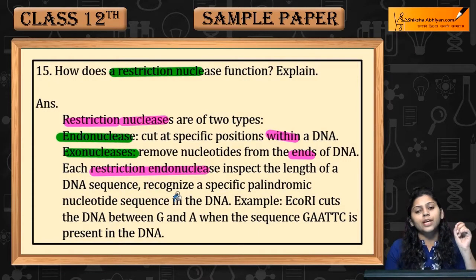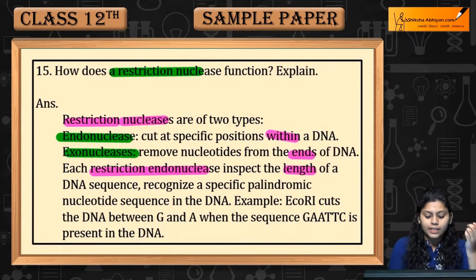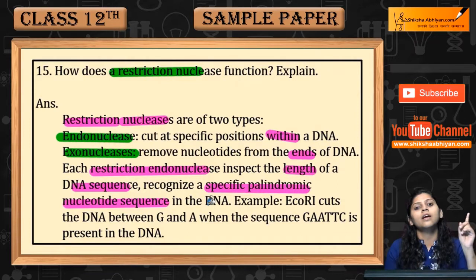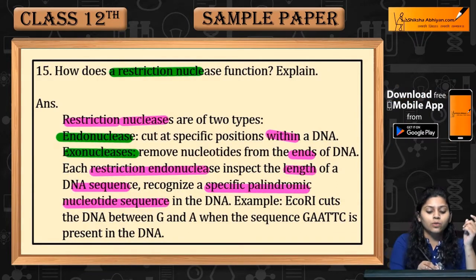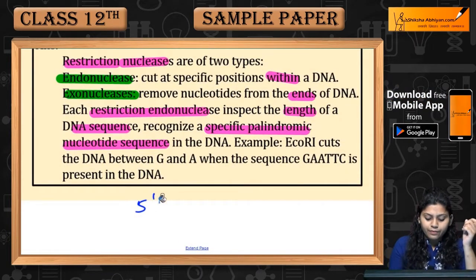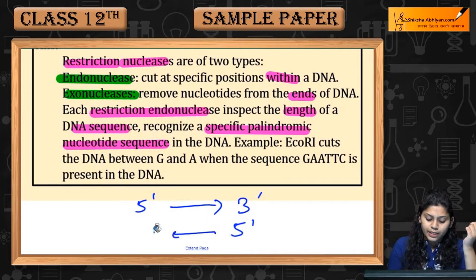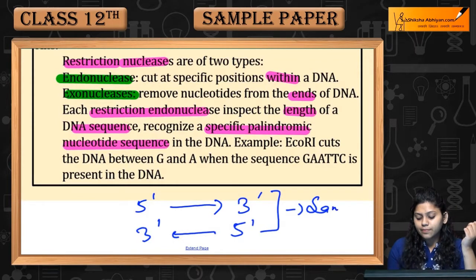Each restriction endonuclease inspect करता है length of DNA sequence, और recognize करता है कुछ specific palindromic sequences. Palindromic sequences क्या होते हैं? अगर हम 5' से 3' reading पढ़ें, तो दोनों side की reading same होंगी।